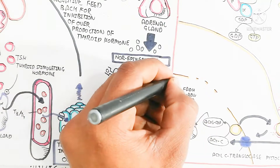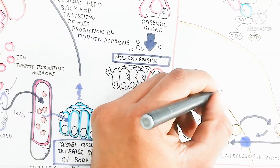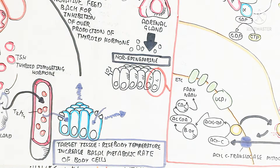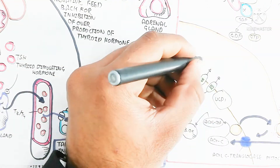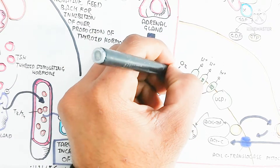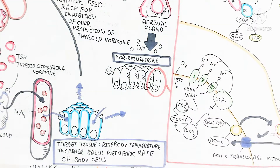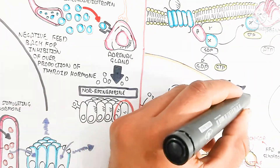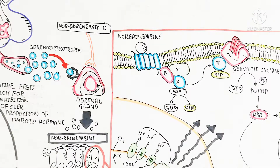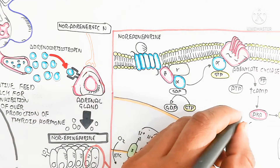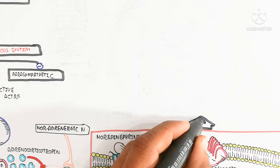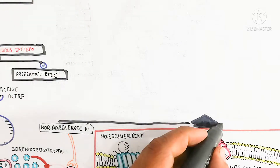Acyl-CoA cannot cross the membrane directly, so the carnitine shuttle is essential. Inside, acyl-CoA undergoes beta oxidation to produce acetyl-CoA, which enters the Krebs cycle generating NADH and FADH2. These move into the electron transport chain, where aerobic respiration pumps protons across the membrane. Uncoupling protein 1 (UCP1) dissipates this proton gradient as heat — this is the core mechanism of non-shivering thermogenesis.